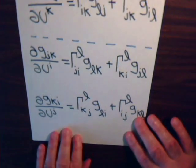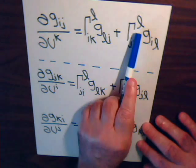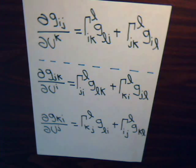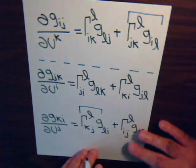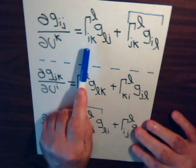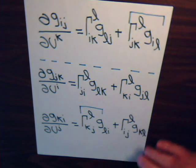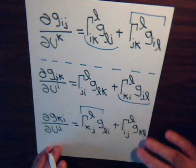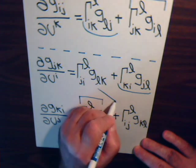Now we have three equations. We can identify matching Christoffel symbol terms: Γ_{jkL} and Γ_{kjL} are the same; Γ_{ikL} and Γ_{kiL} are the same (with metric tensors G_{Lj} and G_{jL} equal by symmetry); and Γ_{jiL} and Γ_{ijL} are the same (with G_{Lk} and G_{kL} equal).